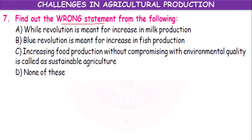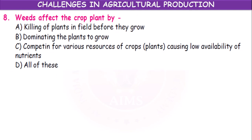Find out a wrong statement from the following: White revolution means increase in milk production; blue revolution is meant for increase in fish production; increasing food production leads to sustainable agriculture. Here all statements are correct, but we are asked to select the wrong one — so the answer is none of these. Weeds affect crop plants by competing for various resources — all of these options are correct.